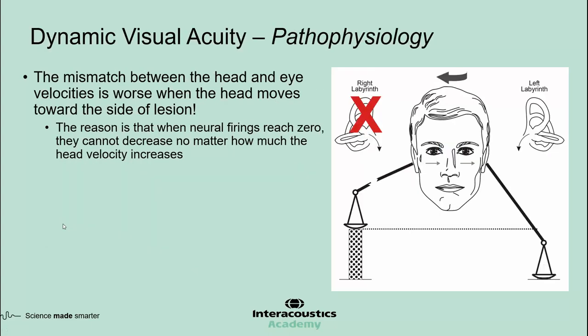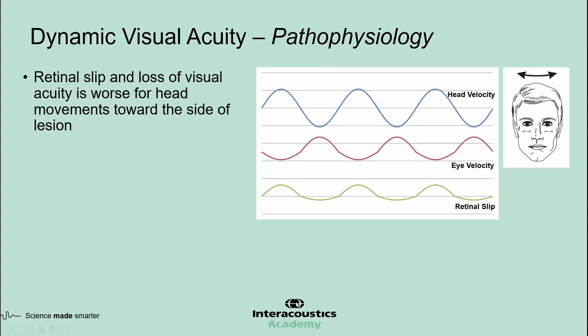For higher head velocities, the mismatch between head and eye velocities is worse when the head moves toward the side of lesion. The reason is that when neural firings reach zero, they cannot decrease no matter how much the head velocity increases. That means dynamic visual acuity is more severely affected when the head moves toward the side of lesion. For half of the sinusoid where the head is moving toward the side of lesion, the retinal slip is larger compared to the other half.